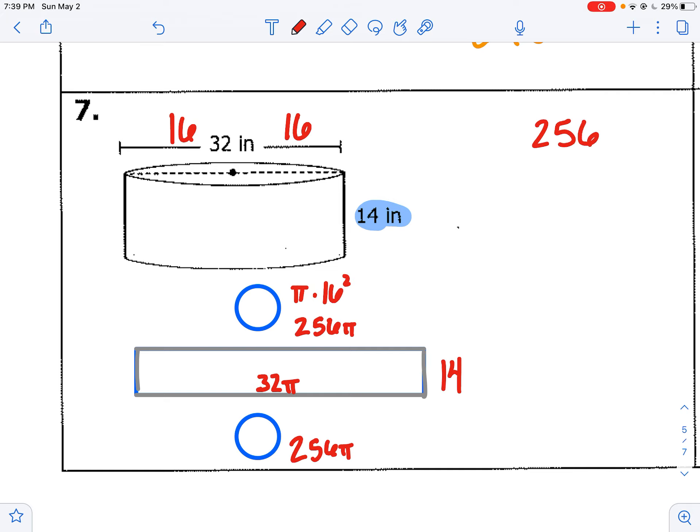So I have 256 pi for the top and bottom, and that rectangle is going to be 32 times pi times 14. So if I simplify that, 32 times 14 is 448, and then just put your pi in the end. So you can just add up all these pis, and you'll get 256 plus 256 plus 448 gets you 960 pi. And that is square inches.